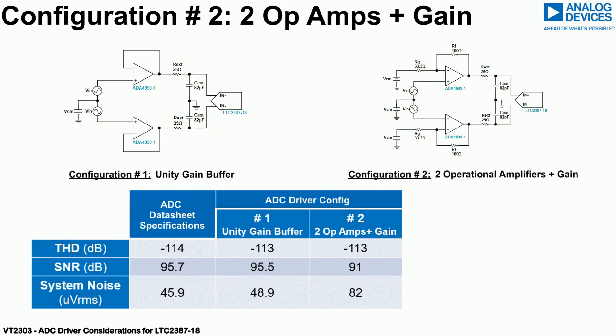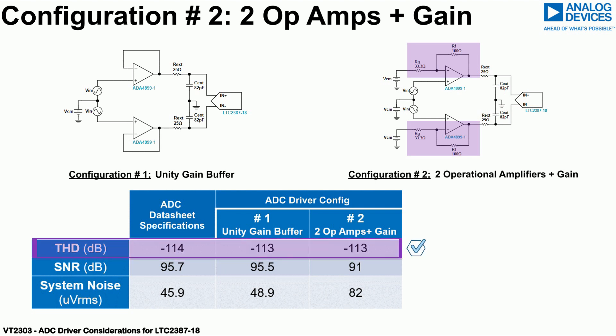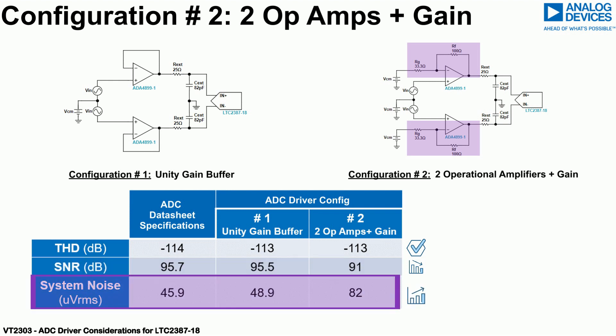Comparing with the performance achieved from recommendation 1, if the gain is added to the driver stage of the circuit, the THD remains the same, while the signal-to-noise ratio is reduced by approximately 4 dB and the system noise increases to 82 microvolts RMS.